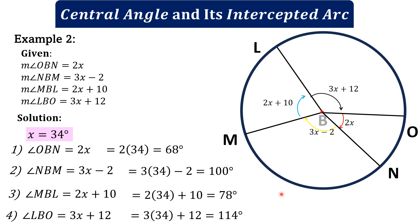You can verify: the total of all central angle measures should equal 360 degrees. We have 68 + 100 + 78 + 114 = 360 degrees. Now let's go to numbers five through eight.